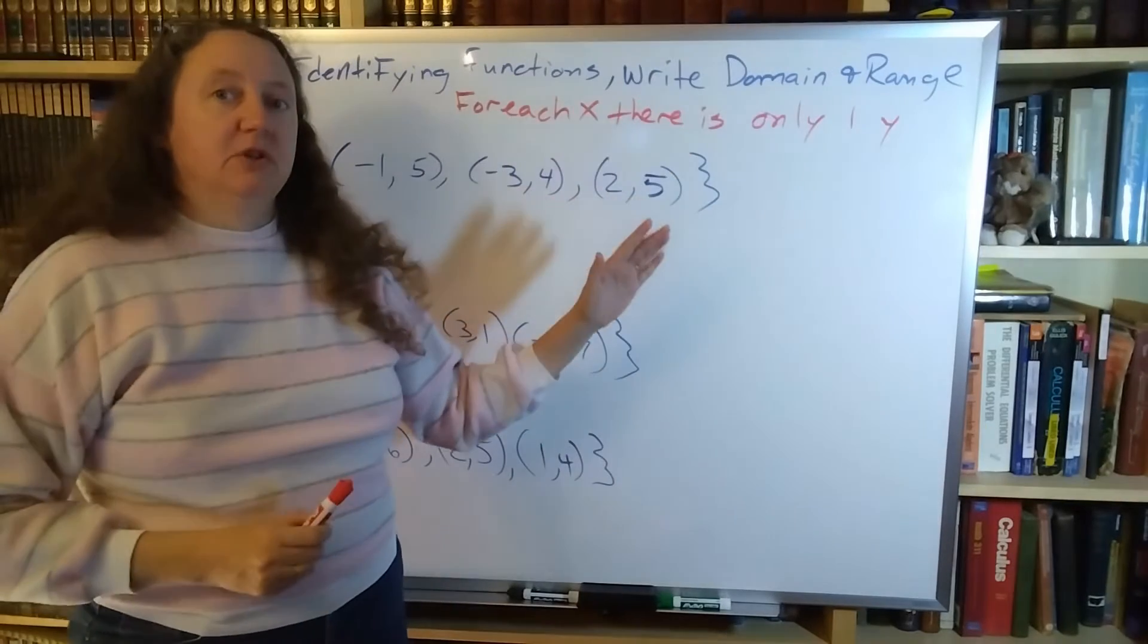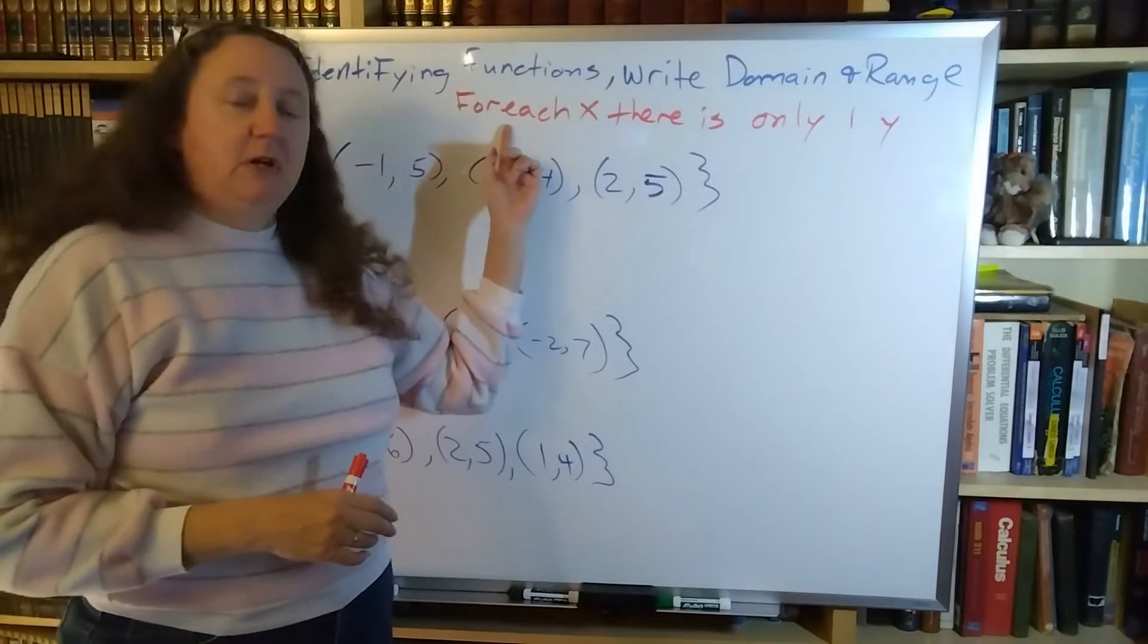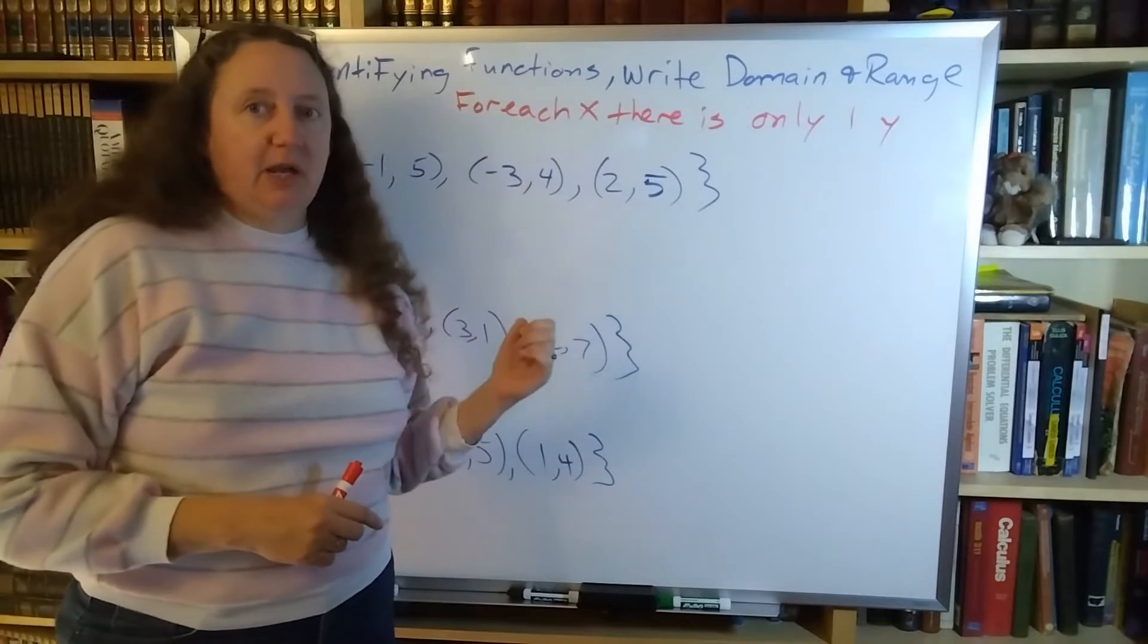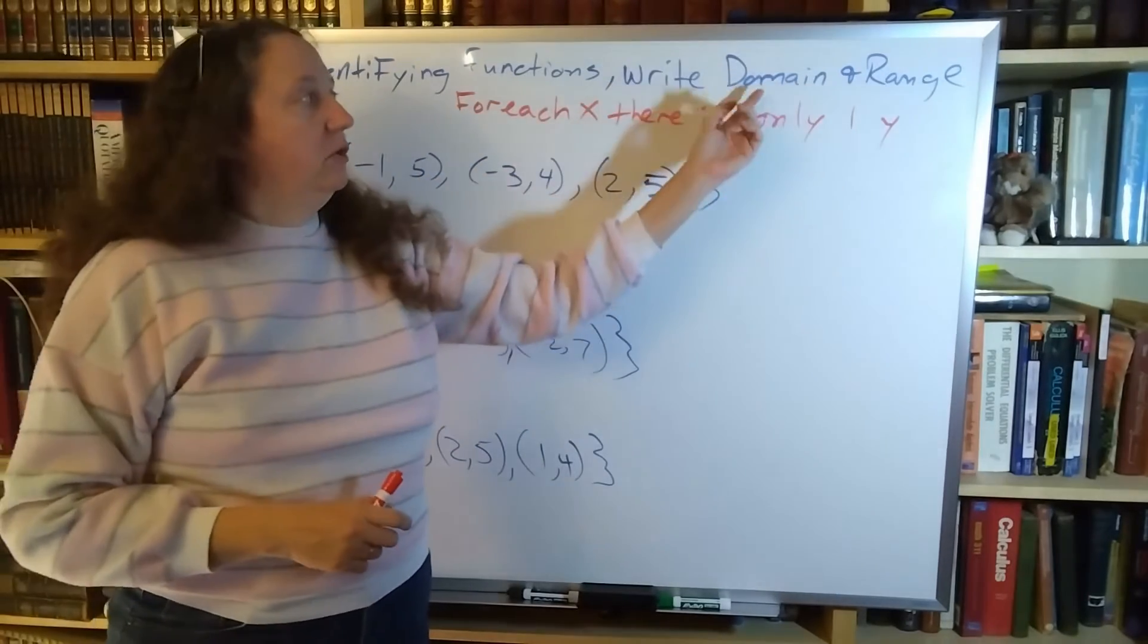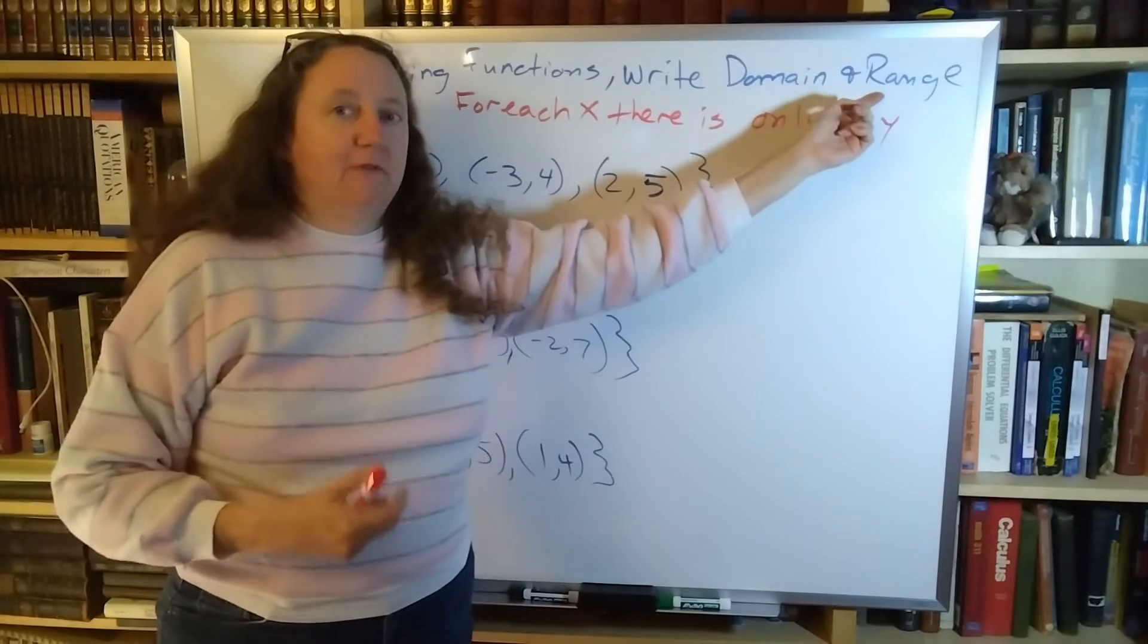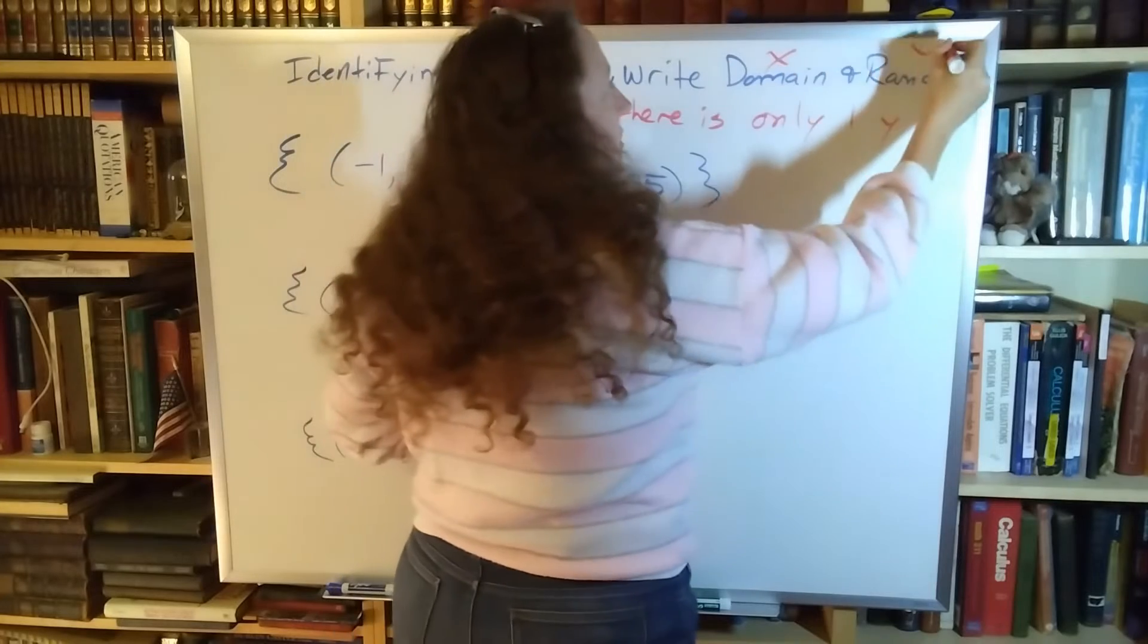For any relationship you can have multiple x's and multiple y's, but if it's a function there's only one y for each x. The domain is whatever x can be and the range is whatever y can be. So domain is x, range is y.